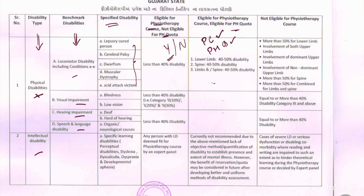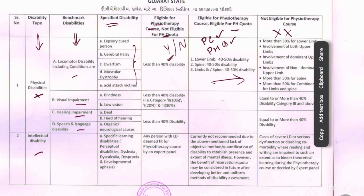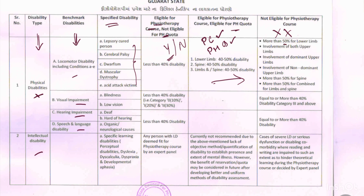Persons who are NOT eligible for the physiotherapy course under physical disabilities include those with more than 50% lower limb disability, involvement of the dominant upper limb — for example, if my dominant hand is the right hand and that right hand is affected, I won't be eligible — involvement of the non-dominant upper limb, more than 50% spine disability, or more than 50% combined four limbs and spine disability.